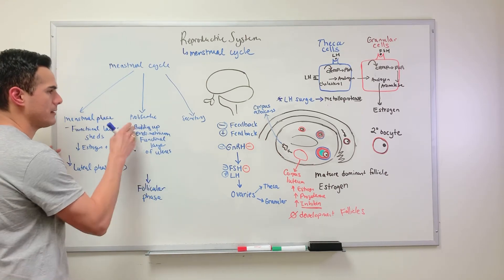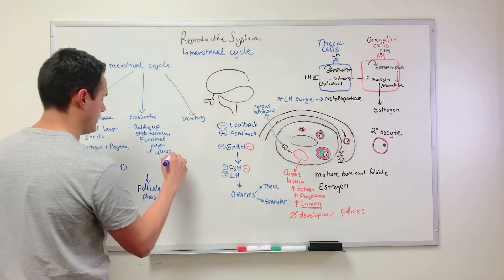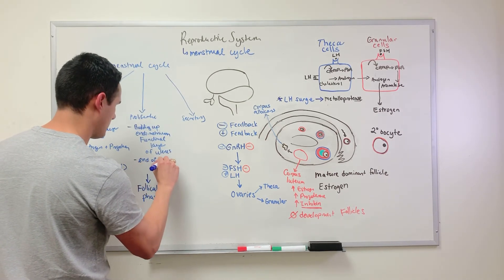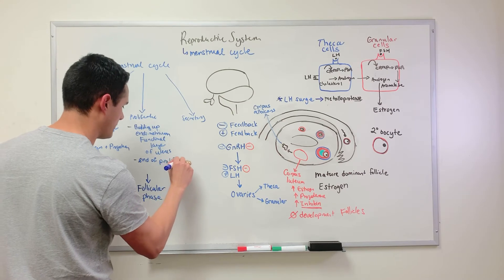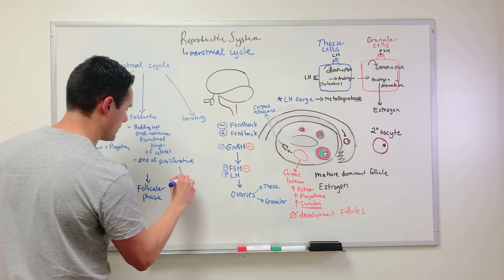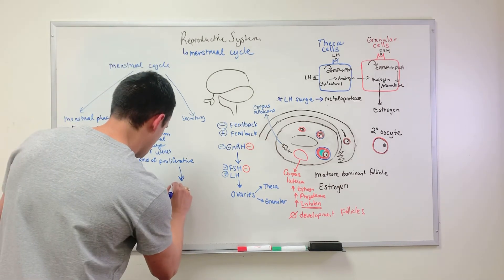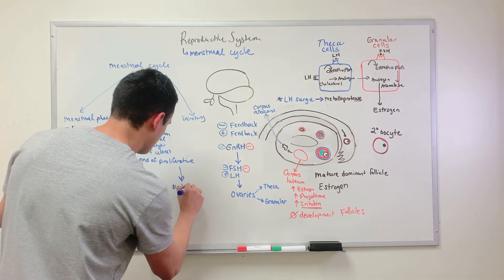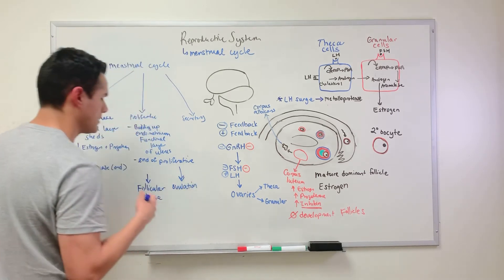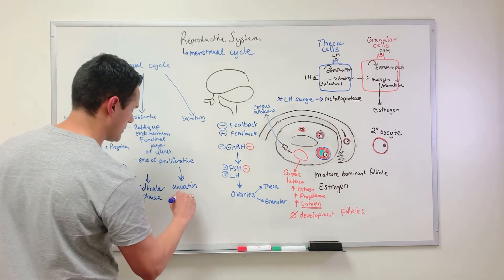At the end of the proliferative phase, this is when ovulation happens. Remember that ovulation is due to the increasing levels of LH — the LH surge.